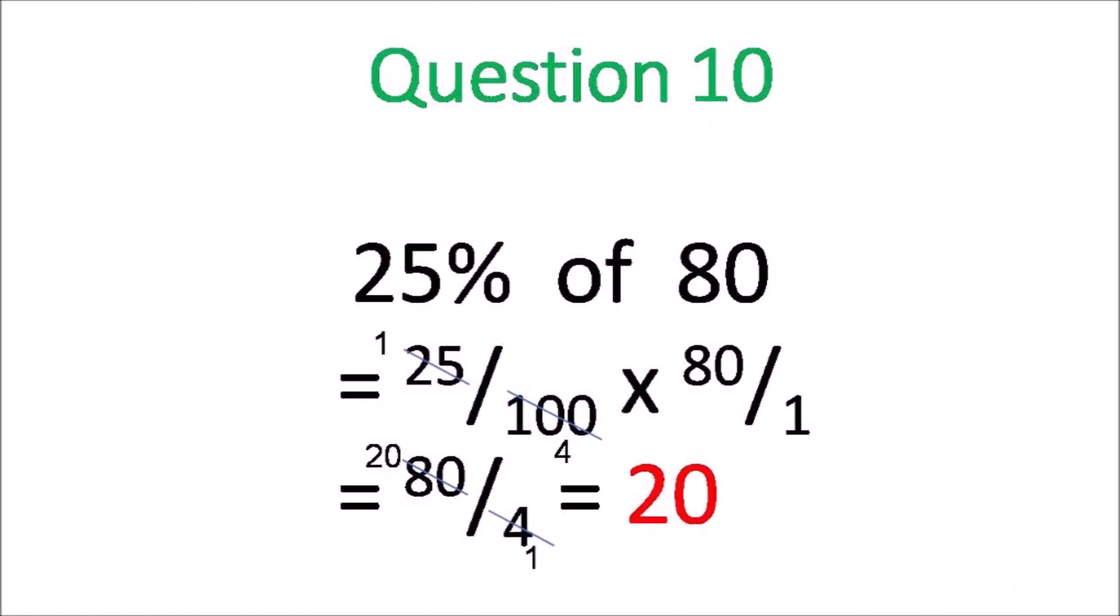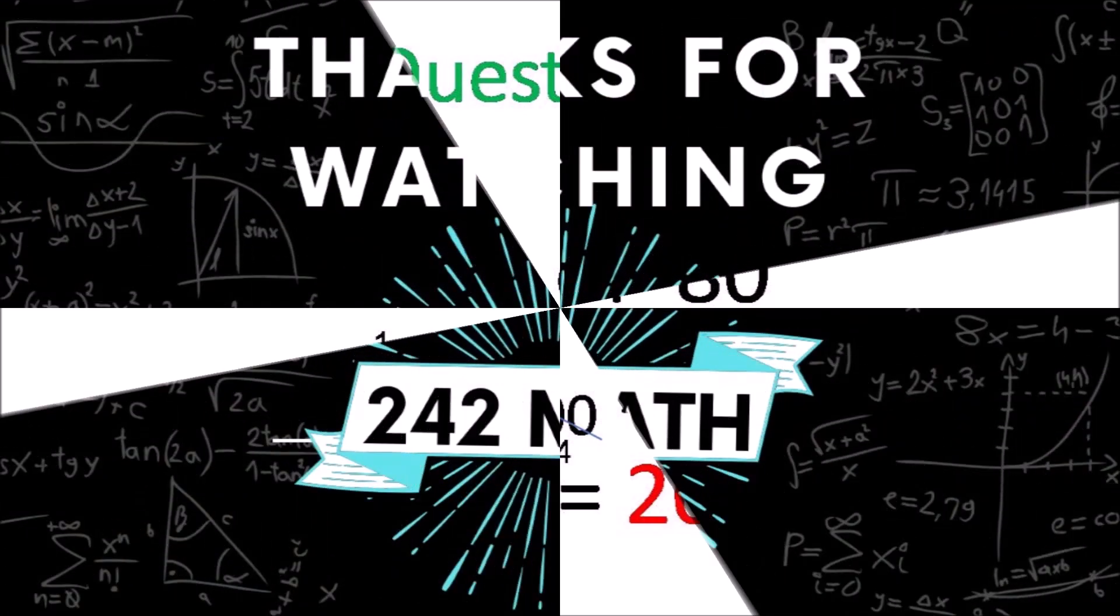Final question: 25% of 80. When you cancel that all down, you get 20. 25% of 80 is 20.